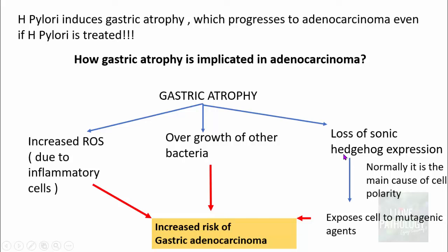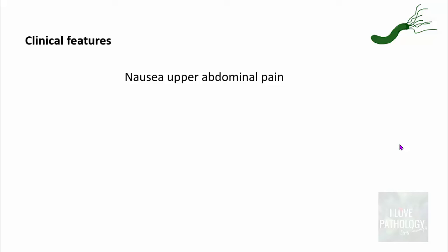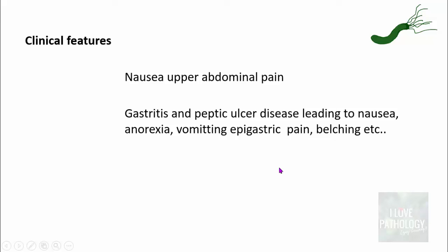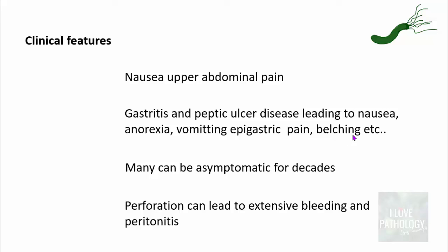The clinical features of H. pylori associated gastritis include nausea, upper abdominal pain, anorexia, vomiting, epigastric pain, and belching if there is associated peptic ulcer disease. Some individuals can be asymptomatic for decades, and perforation can be a complication leading to extensive bleeding and peritonitis.